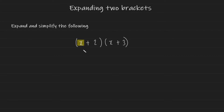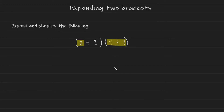Take the first term and you can highlight it, or you can just put a little mark next to it so you don't forget what you're dealing with. You're going to take that term and multiply it onto the entire second bracket. We're going to have x multiplied by x, which gives us x squared.